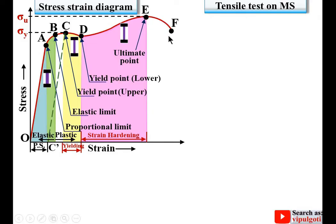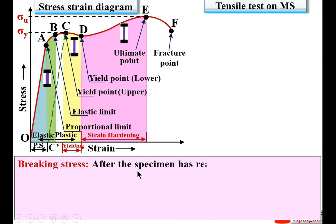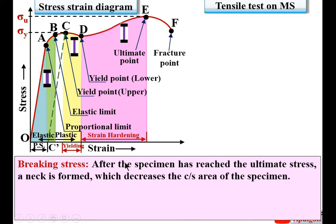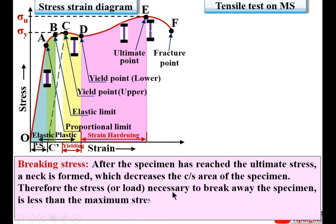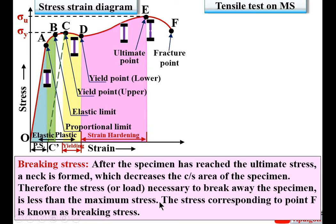Further increasing the tensile load brings you to point F, which is known as the fracture point — sometimes called the breaking point. The stress corresponding to point F is known as the breaking stress. After the specimen reaches ultimate stress at point E, a neck is formed which decreases the cross-sectional area of the specimen after point E. Therefore, the stress or load necessary to break the specimen is less than the maximum (ultimate) stress.